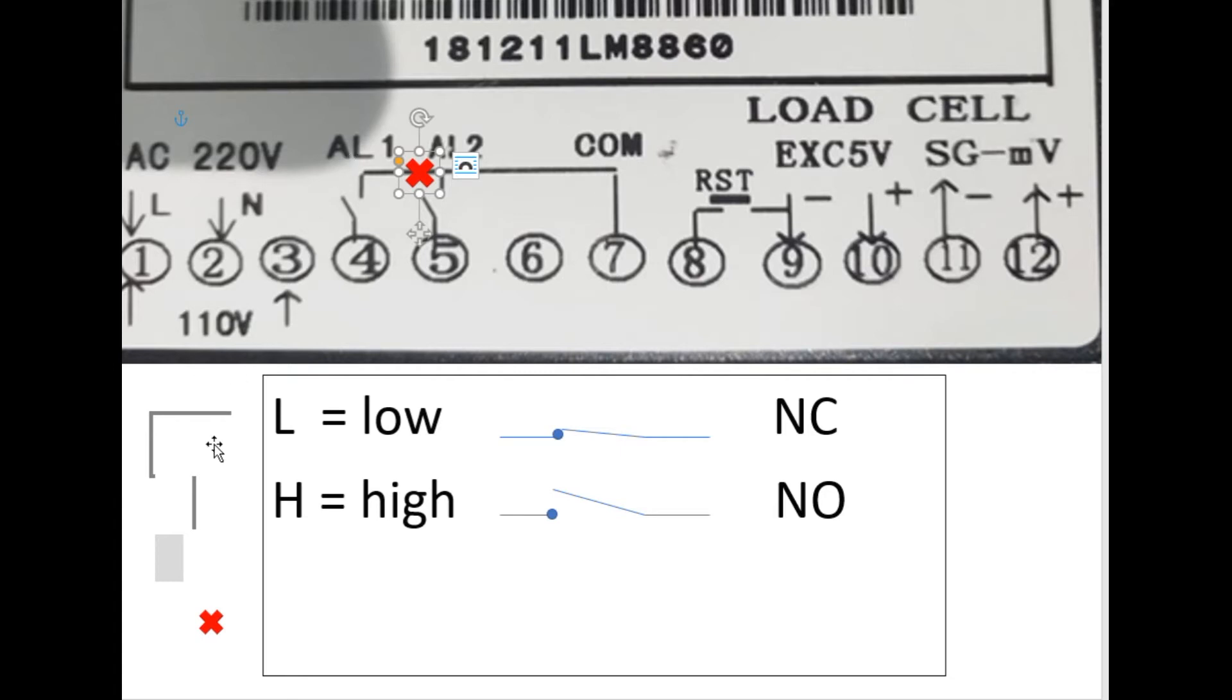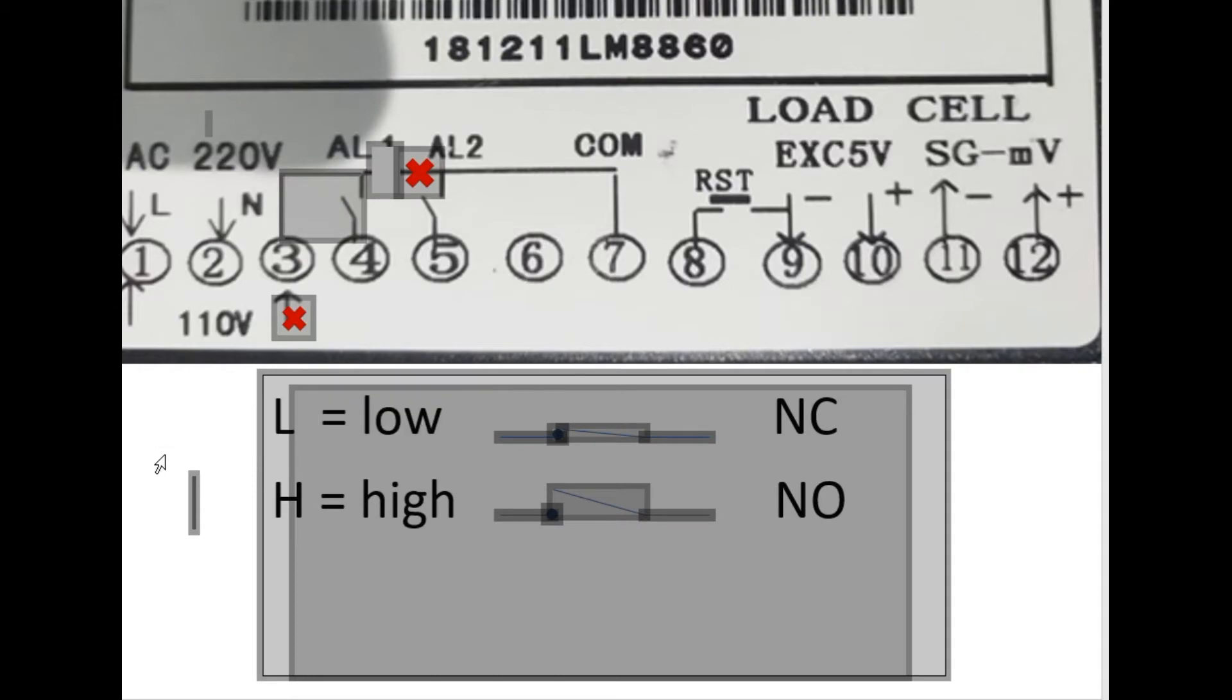I cut this one from here, so seven is not anymore connected to L1. So I have to create a common for L1. So I have run a wire from here to number three, and from number three from inside this one I cut it. So this one became now the common for L1 and seven became the common for L2, I mean alarm one and alarm two.